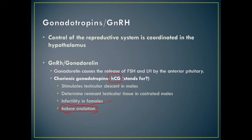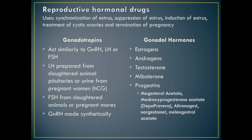Some reproductive hormonal drugs are used to synchronize, suppress, or induce estrus, treat cystic ovaries, or terminate pregnancy. Gonadotropins act similarly to GnRH, LH, or FSH. LH is prepared from pituitaries of slaughtered animals or urine from pregnant women. FSH comes from slaughtered animals or pregnant mares, and GnRH can be made synthetically.